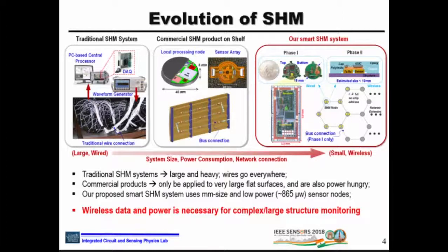Our proposed smart system uses millimeter-sized, low-power sensor nodes drawing as little as 865 microwatts. In phase one of our proposal, we built local processing nodes of about 18 millimeter size, connected in a mesh network communicating over I2C protocol. This reduces size, power, number of wires and susceptibility. In phase two, we aim to make it completely wireless — with wireless power delivery and wireless data transmission at an estimated size of less than 10 millimeters.